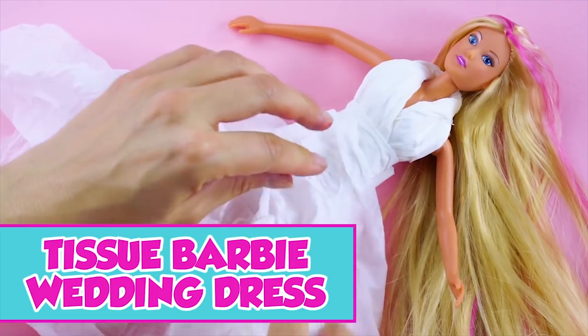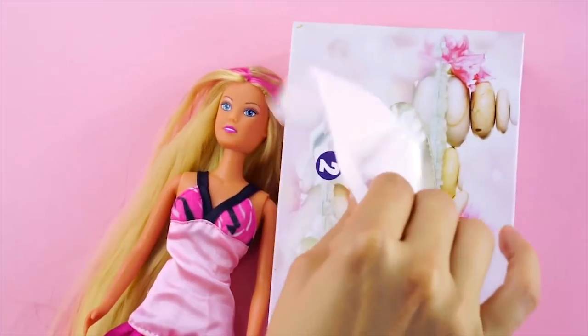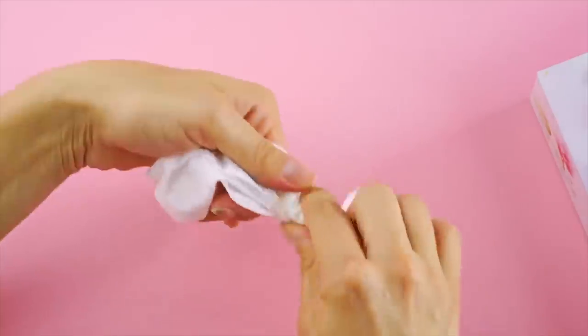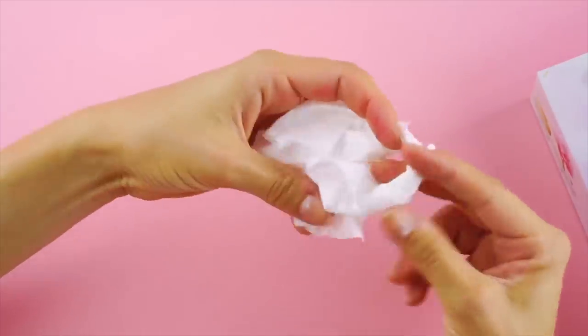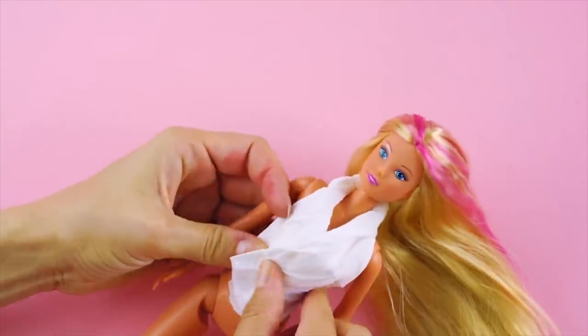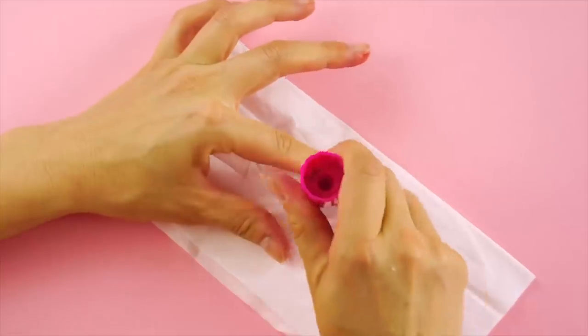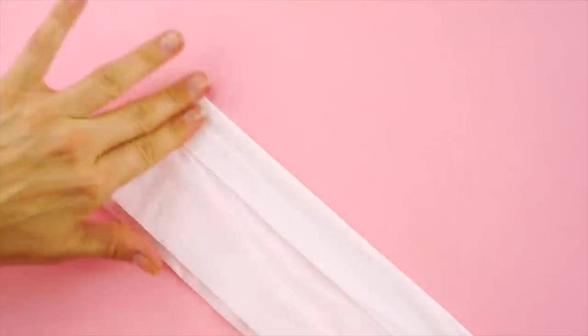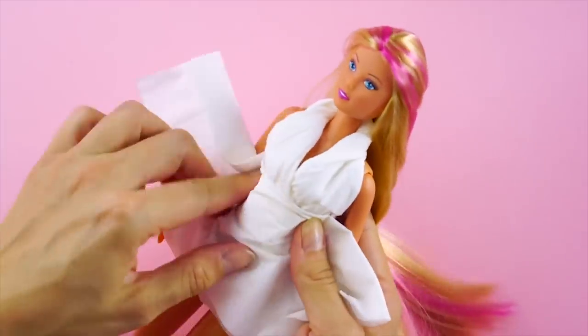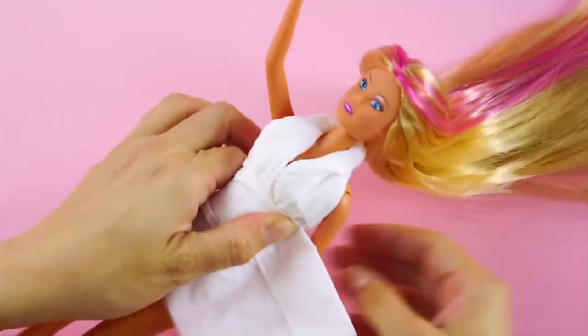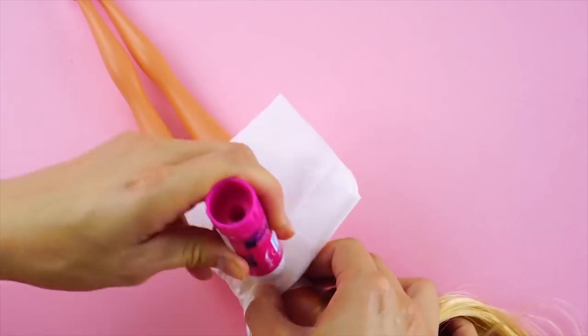Tissue Barbie wedding dress. Oh no, it's Barbie's wedding day and all you have to wear are Kleenex. Don't get cold feet just yet. Fold a tissue into a thin rectangle and twist. Wrap around Barbie's neck to make a halter top. Next, fold a tissue in half and make a fold about an inch thick. Glue it down and wrap this piece around Barbie's waist. Glue down any extra tissue in the back.